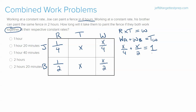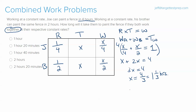We set it equal to one because they complete one job. Multiplying through to eliminate fractions gives us x plus 2x equals 4, so 3x equals 4, and x equals four-thirds, which converts to one and one-third hours. Since one-third of an hour is twenty minutes, the answer is one hour and twenty minutes.